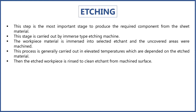The etching step is the most important stage to produce the required component from sheet metal. This stage is carried out using an immersion-type etching machine. The workpiece is immersed into the selected etchant and the uncovered areas are etched. This process is generally carried out at elevated temperature, which is dependent on the etchant and the material. The etchant over the workpiece is agitated to clean fresh etchant onto the machined surface.